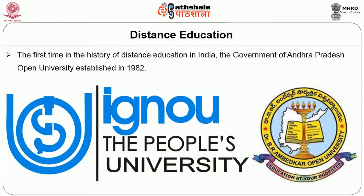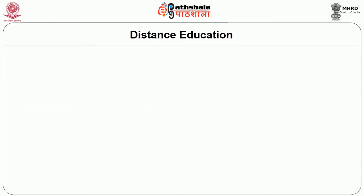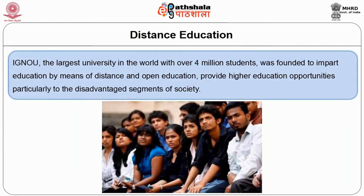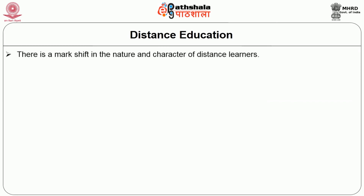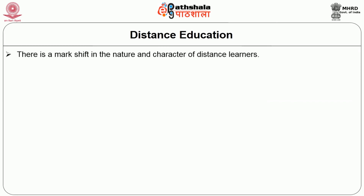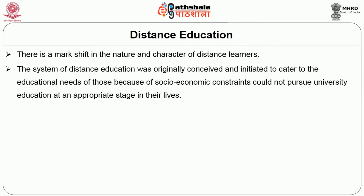In September 1985, the government of India decided to set up the Indira Gandhi National Open University. It is the largest university in the world with over 4 million students, founded to impart education by means of distance and open education and to provide higher education opportunities particularly to the disadvantaged segments of society. There is a marked shift in the nature and character of distance learners. The system was originally conceived to cater to those who, because of socioeconomic constraints, could not pursue university education at an appropriate stage in their lives.